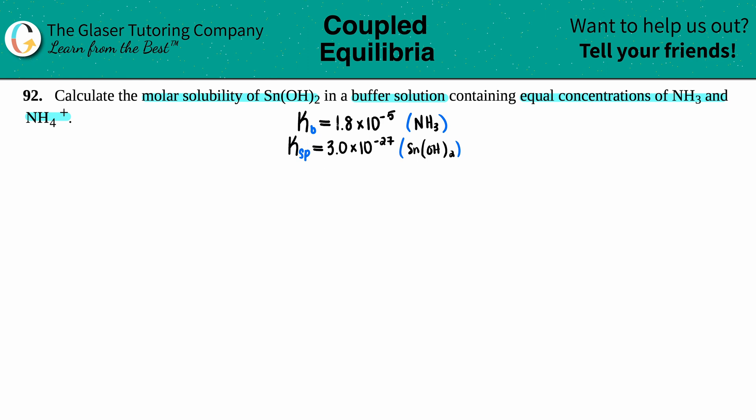They're including that with a buffer solution. Buffers, remember from last chapter, are when you have acids and bases—a conjugate pair of a weak acid with its weak conjugate base.